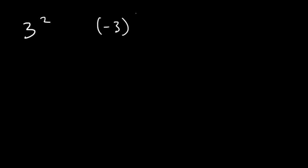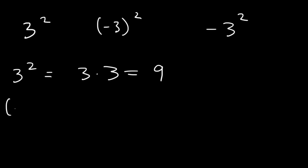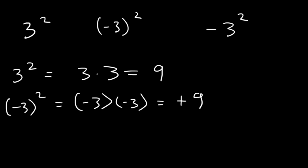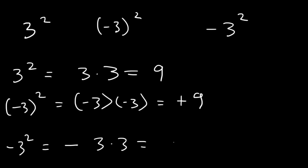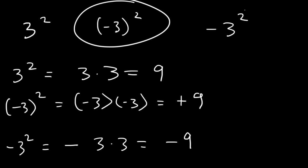Now let's talk about exponents. What is the difference between 3 squared, negative 3 in parentheses squared, and negative 3 squared without parentheses? 3 squared is 3 times 3, which is 9. Negative 3 in parentheses squared means two negative 3s multiplied: negative 3 times negative 3 is positive 9. But negative 3 squared without parentheses means the exponent only applies to the 3, not the negative sign — so it's negative of 3 times 3, which is negative 9.